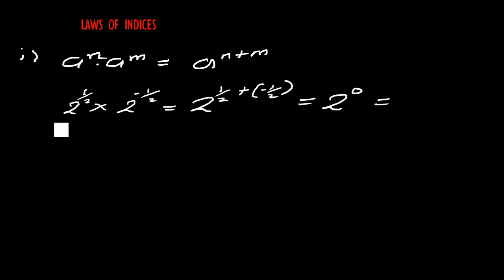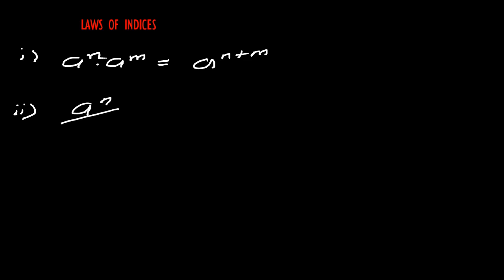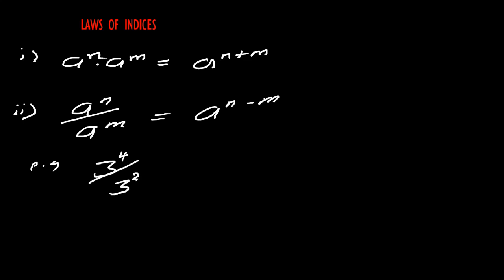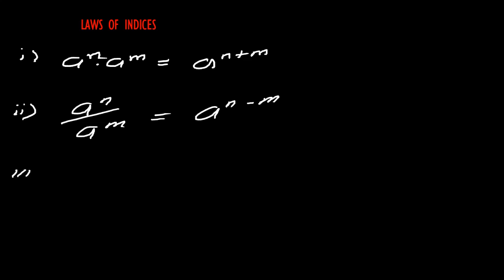Any number raised to power zero is one. The second law: when you have the same base with the division sign, you subtract the indices in that order. For example, when you have three raised to power four divided by three raised to power two — same base with division sign — you subtract the powers in that order, and you end up with three raised to power two.